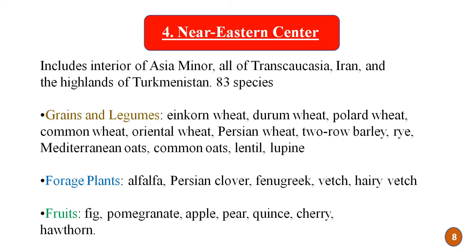The fourth center is the Near Eastern center, which includes the interior of Asia Minor, Transcaucasia, Iran, and the highlands of Turkmenistan. It includes 83 different plants, including grain crops, legumes, forage plants, and fruits. Examples are quoted here.